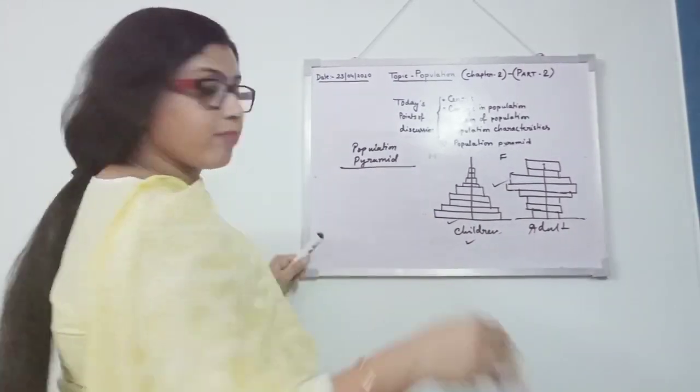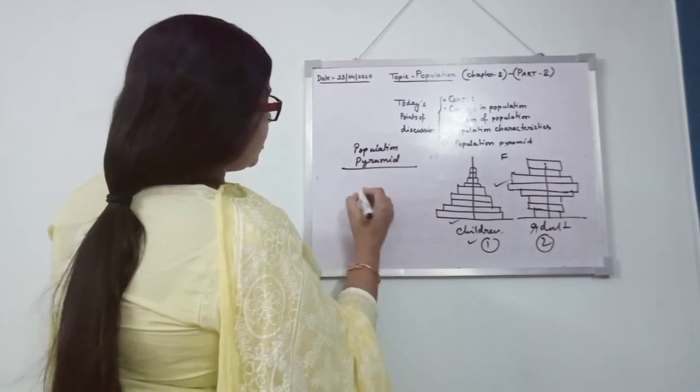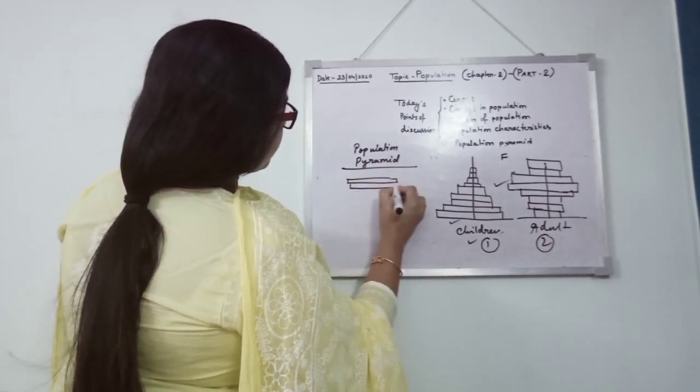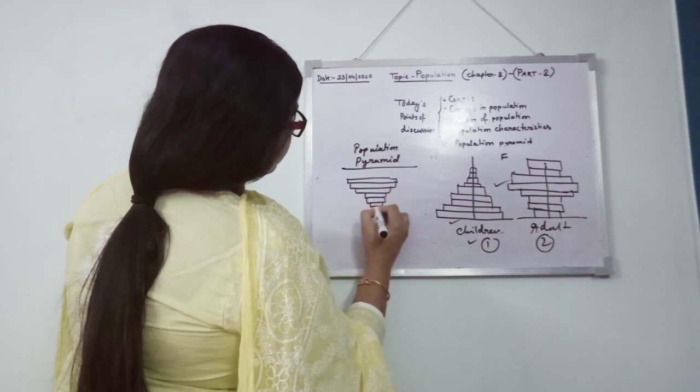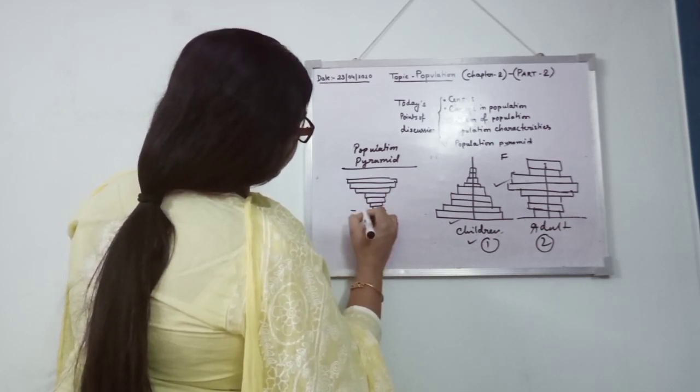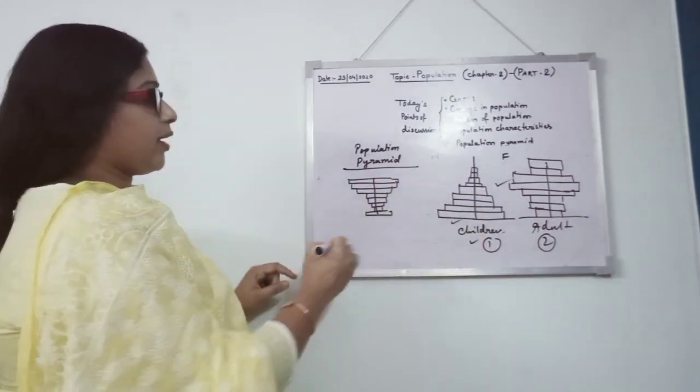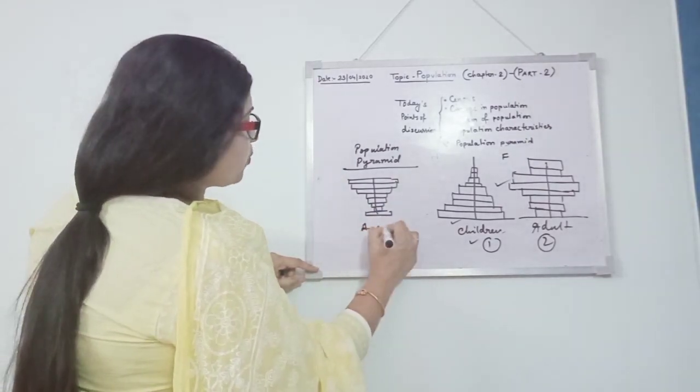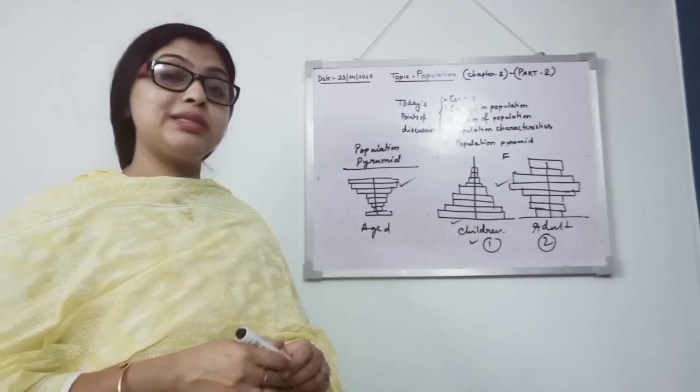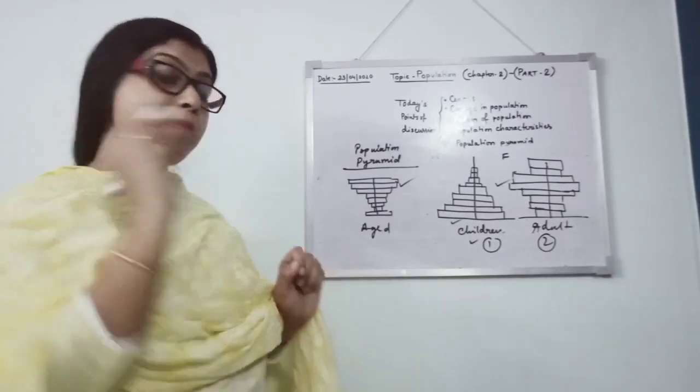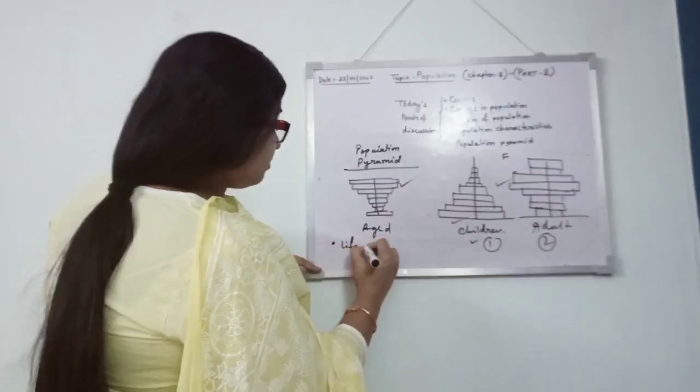Number 3, I'm giving the example. This kind of pyramid, here we are getting to see the aged group is maximum. When the aged group is maximum, means they need better medical facilities. Somehow in this type of country, there is good life expectancy.